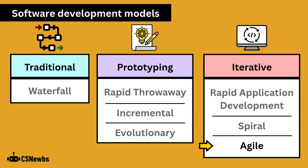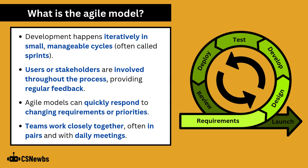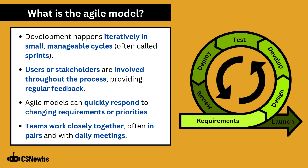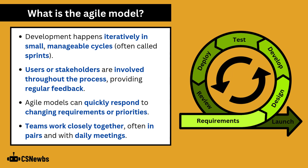The Agile model is an example of software development focusing on the use of iteration. In the Agile model, development happens iteratively in small manageable cycles, often called sprints. Users or stakeholders are involved throughout the process providing regular feedback. Agile models can quickly respond to changing requirements or priorities, and teams work closely together, often in pairs.